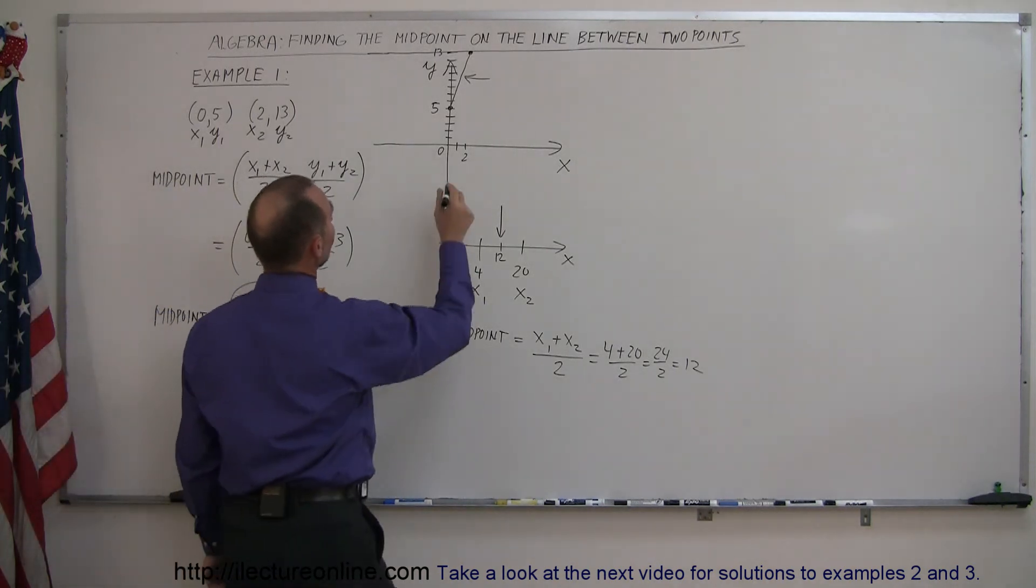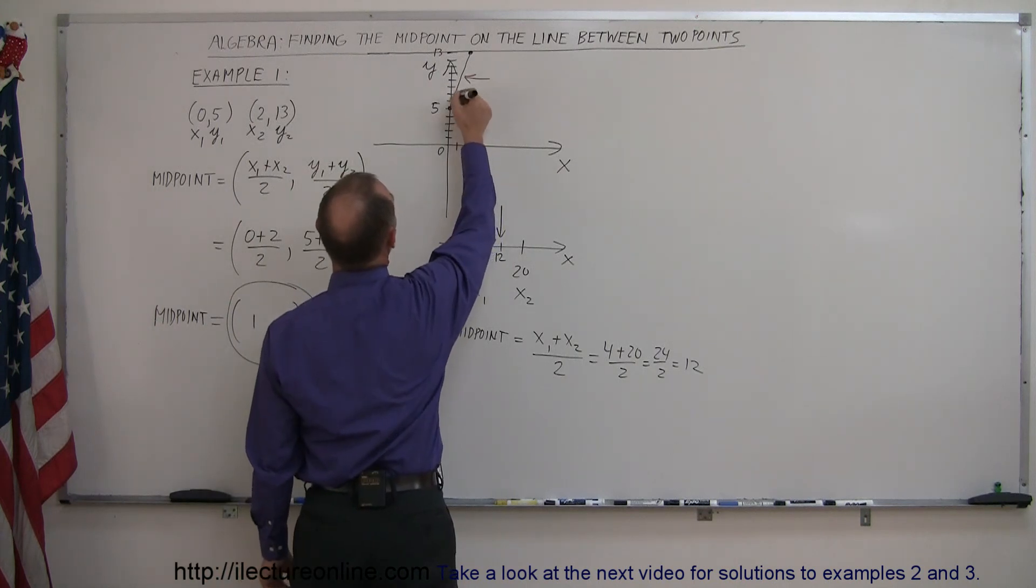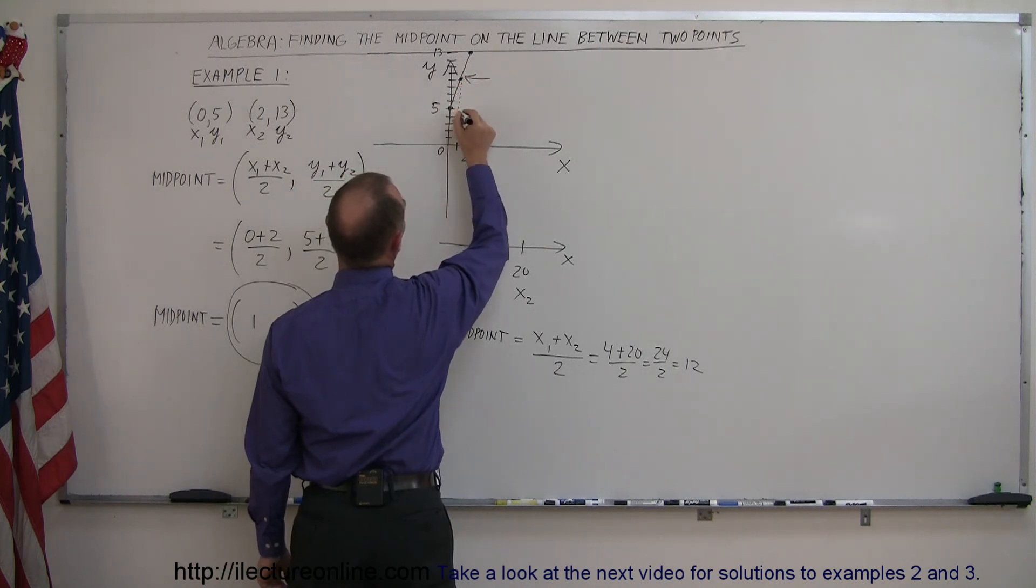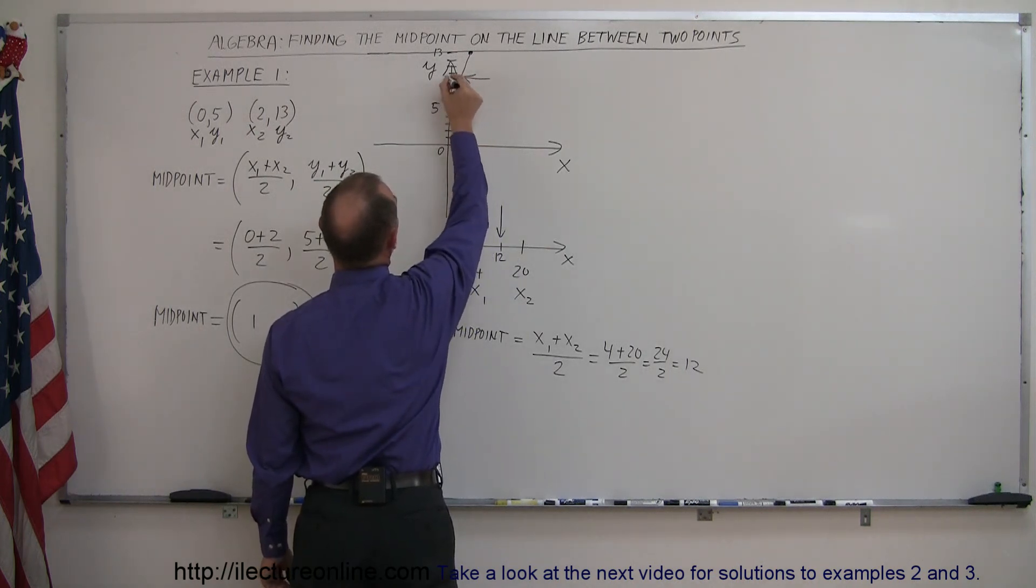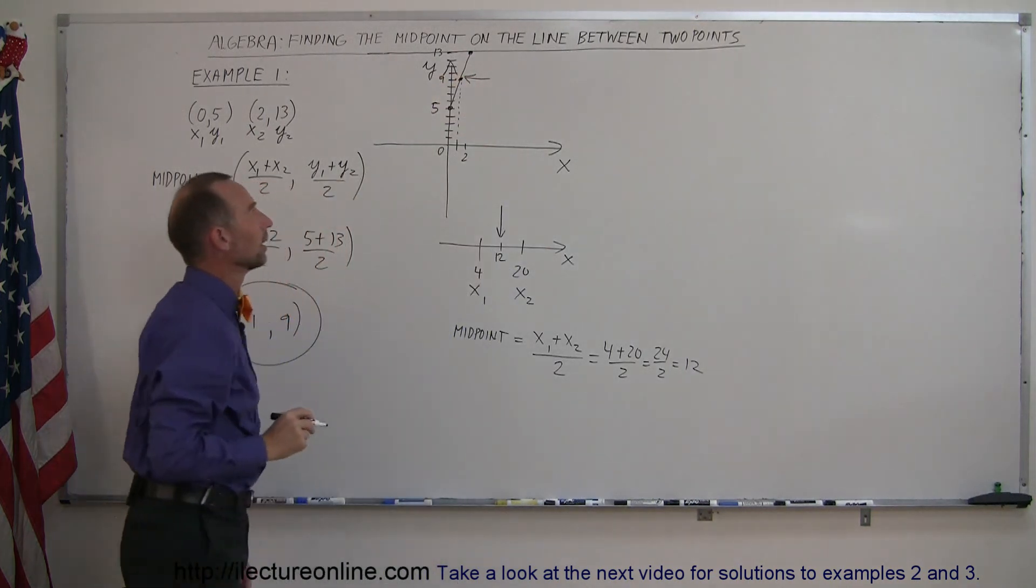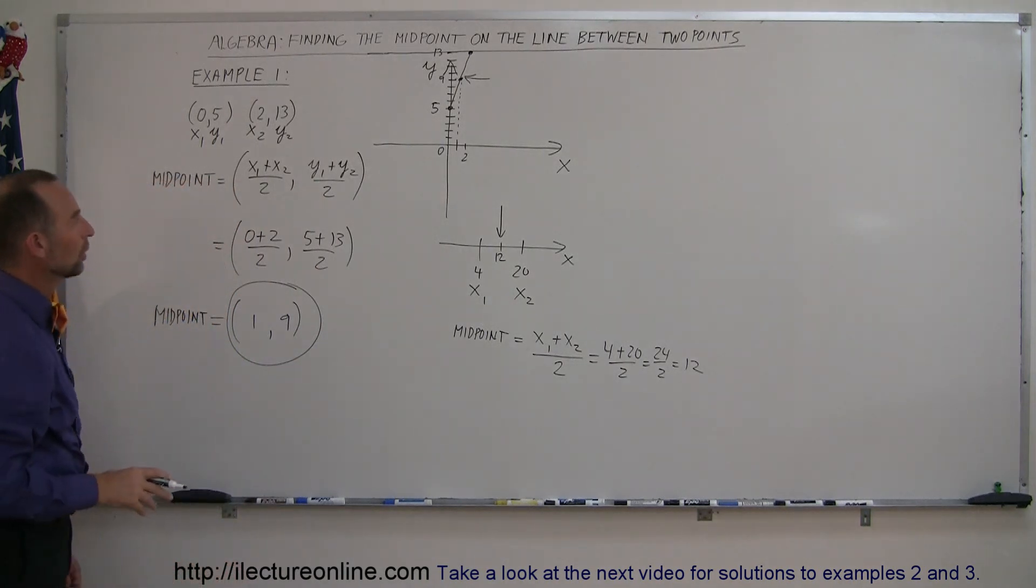So we can see then, that if we go up to, that's 5, 6, 7, 8, 9, and 1, right there, that's the midpoint, there, and the number 9 there. Okay, that's how you found the midpoint between any two points on the xy-plane.